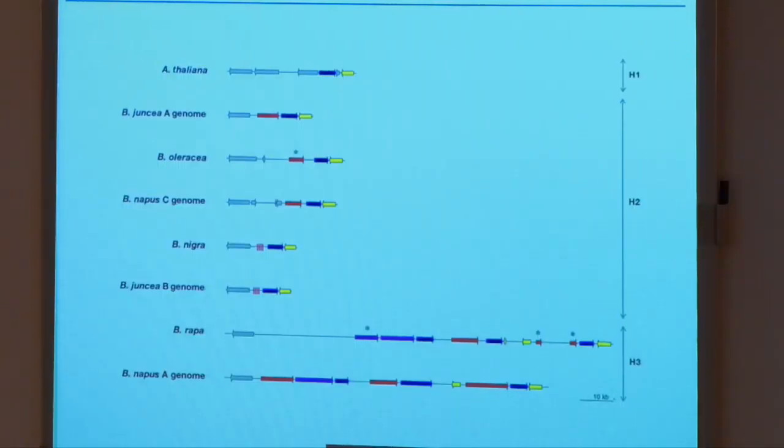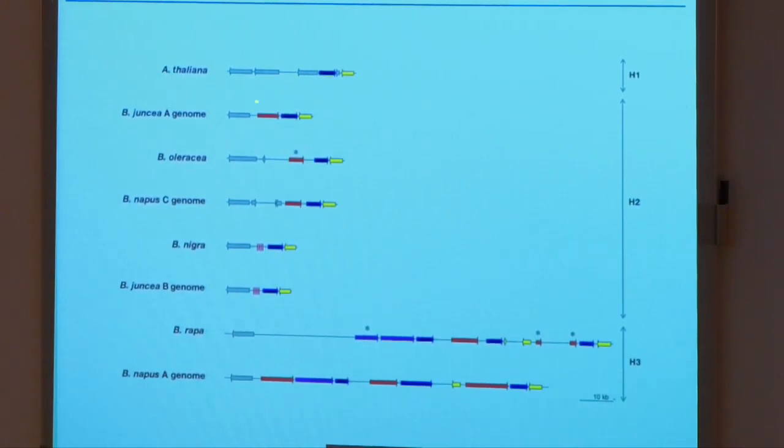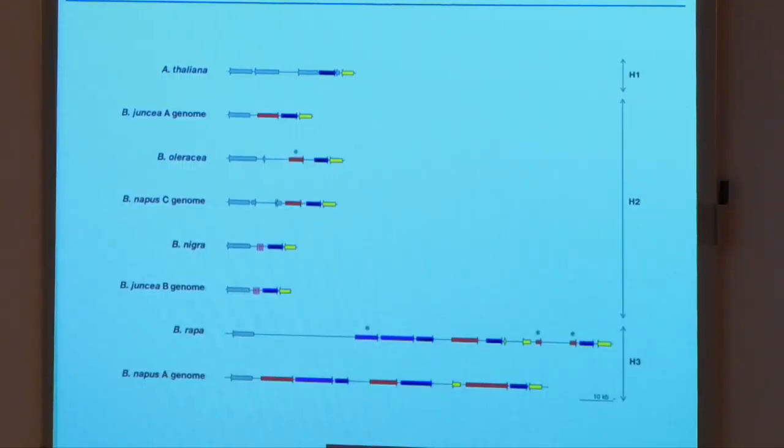We also looked at orthologues of this gene in different Brassica as well as related species like Arabidopsis thaliana and Arabidopsis lyrata, and found three different kinds of haplotypes. Arabidopsis thaliana and Arabidopsis lyrata do not have this gene at all, although the rest of the synteny within the region is maintained. In some species there is one copy — with some having pseudogenes or just remnants — while in a third haplotype there are multiple copies available. Some of these orthologues might also be functional, potentially imparting resistance to the same or even a broader spectrum of isolates.